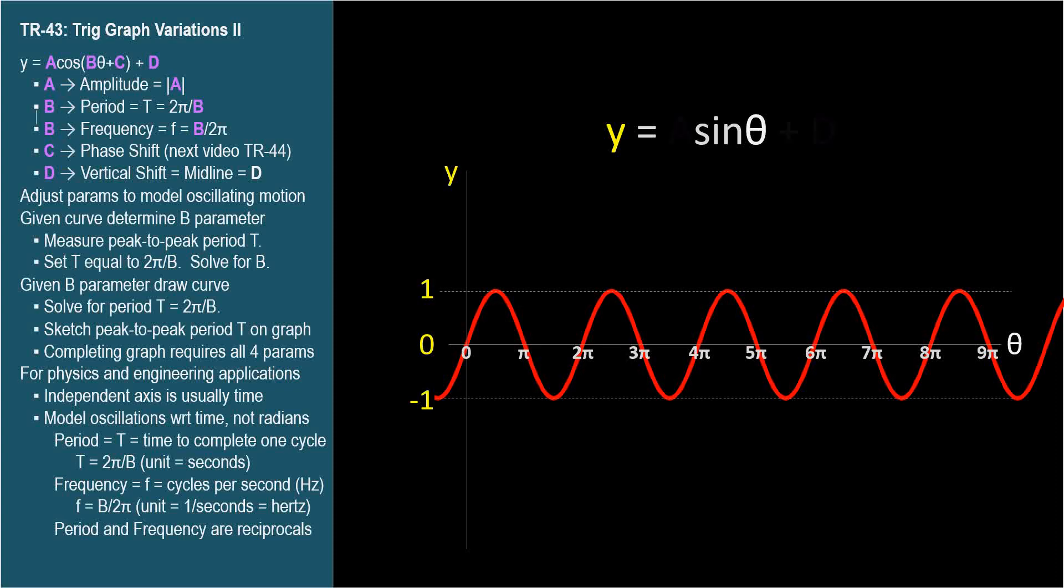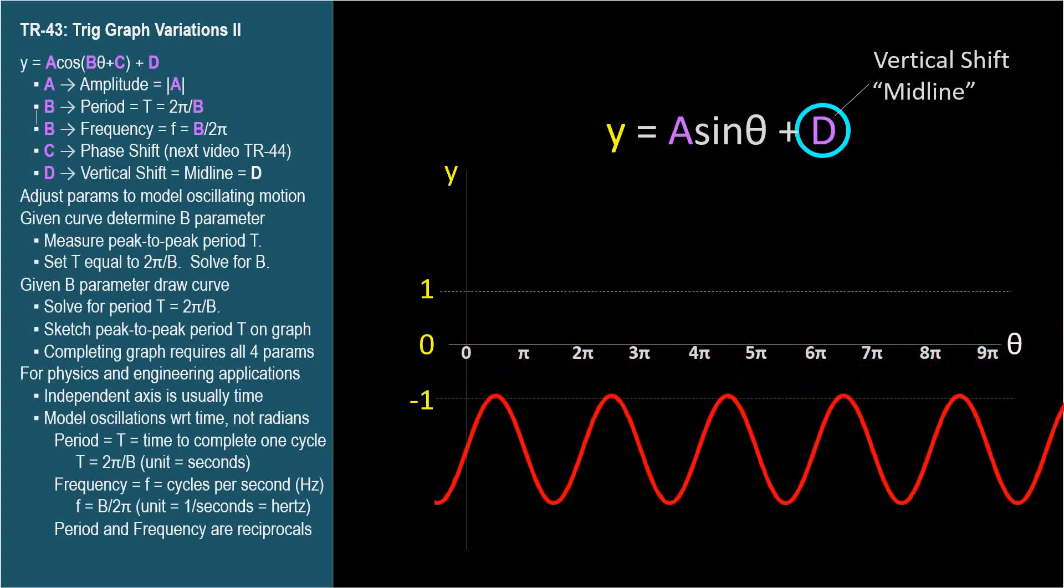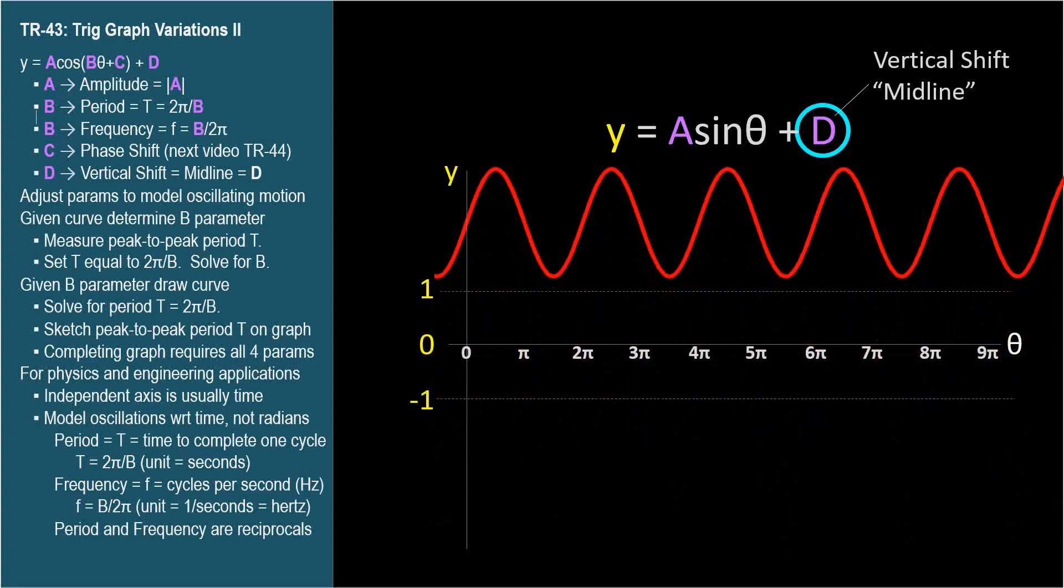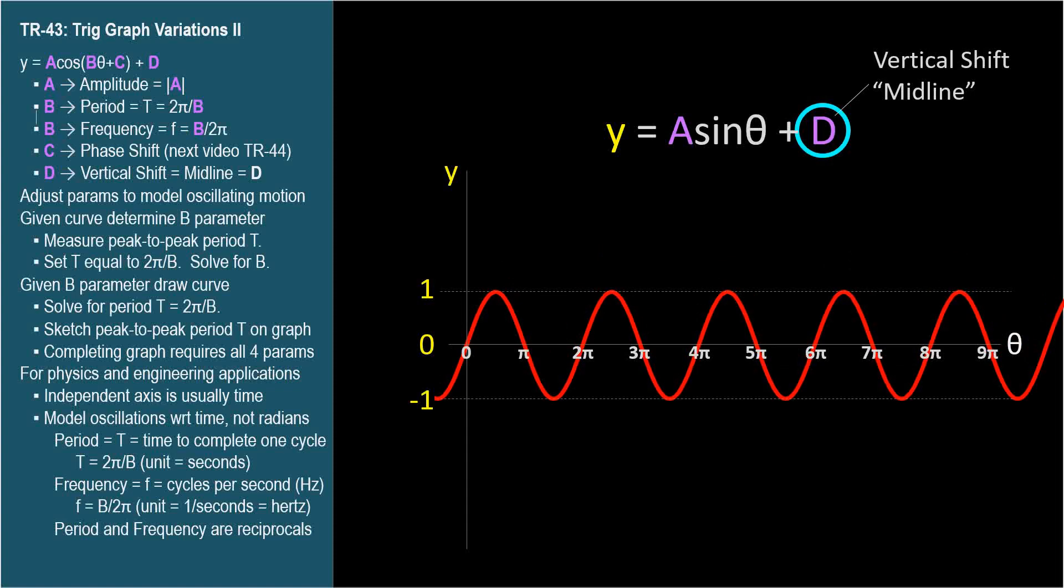In TR-42, we introduced two parameters that change the vertical characteristics of the graph. The d parameter, called the vertical shift, corresponds to the midline, the horizontal line about which the wave oscillates. The d parameter shifts the entire graph vertically, up or down on the coordinate system.